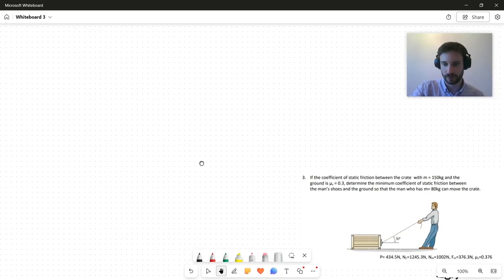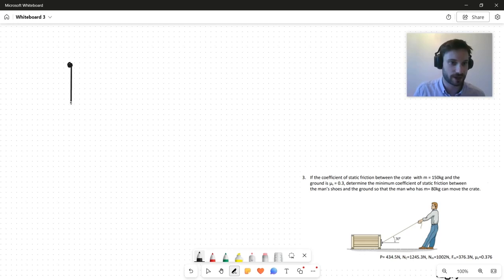The free body diagram for the dude: well, he's of mass 80 kg, so let's describe that as 80g down. There's a normal force, let's call it Nm for man. There's F, which we defined earlier as 434. I'm just going to call it F for now even though we know its value. And the thing pulling him to the right is the frictional force, let's call it μs times Nm.